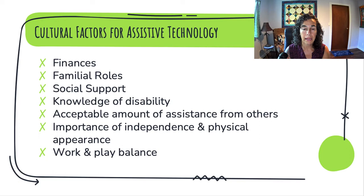We also want to think briefly about cultural factors for assistive technology. When we talk about culture in pediatrics, we think about race and ethnicity, socioeconomic status, and a variety of other aspects of families that may alter how and what they want, need, and are able to access in terms of assistive technology. Finances play a huge role, along with what kind of health insurance you have.